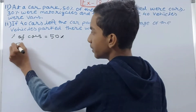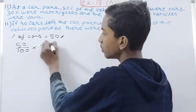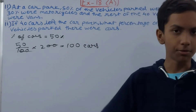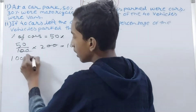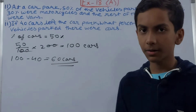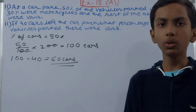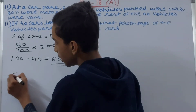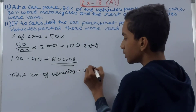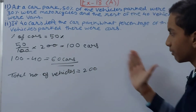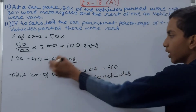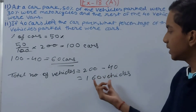So there were 100 cars originally. Now 40 cars have left the park, so 100 minus 40 equals 60 cars remaining. The total number of vehicles is also reduced: 200 minus 40 equals 160 vehicles in total after the 40 cars left the park.